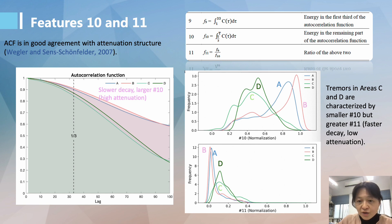And what we see from the feature histograms here on your right-hand side, areas A and B are more alike, whereas areas C and D are more alike. Areas C and D have smaller feature number 10, and therefore faster decay, lower attenuation.